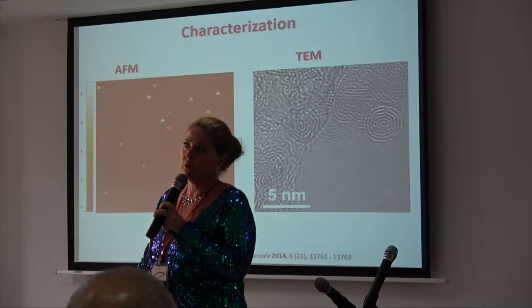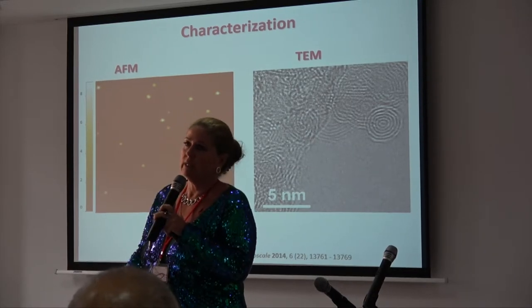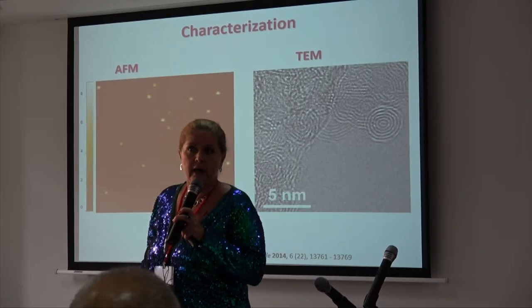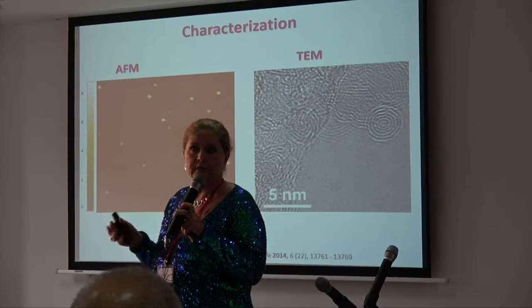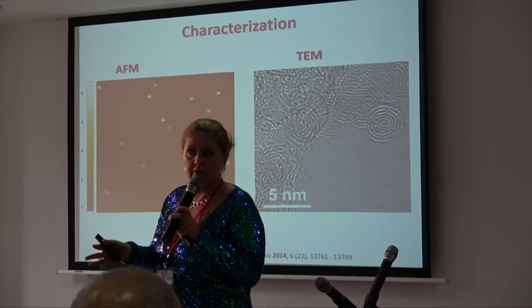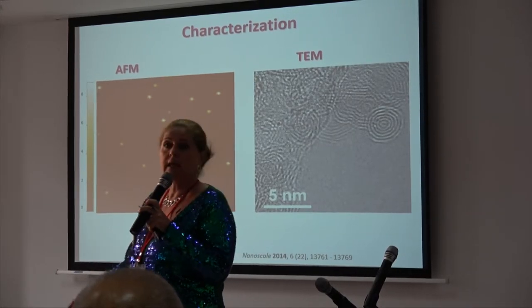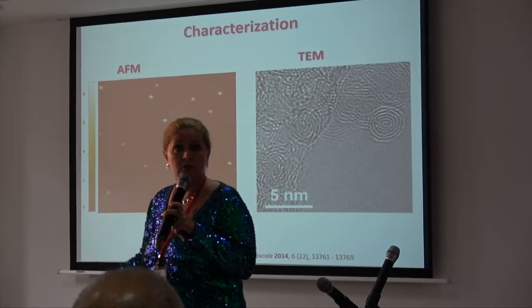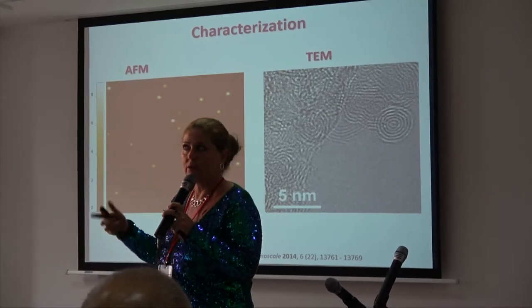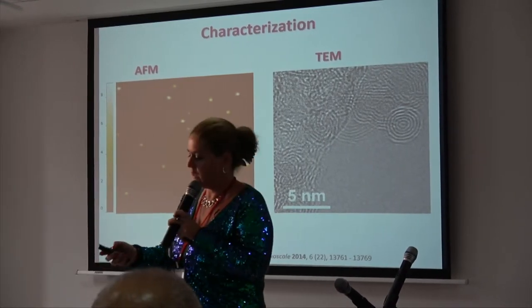Here I'm just showing you the microscopy, where we can see they are spherical nanoparticles with a diameter of five nanometers, and in the TEM you can see the multi-layer structures — that's why we call them carbon nano onions.